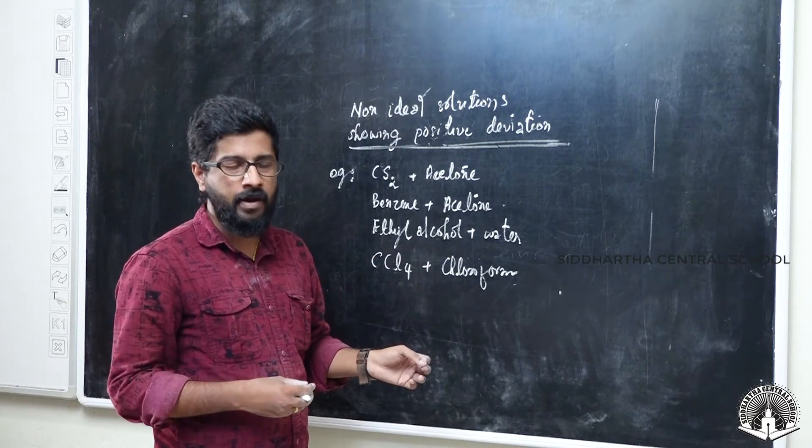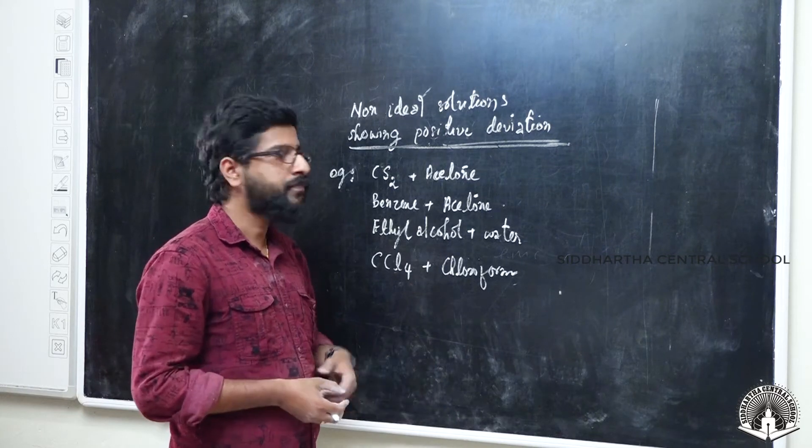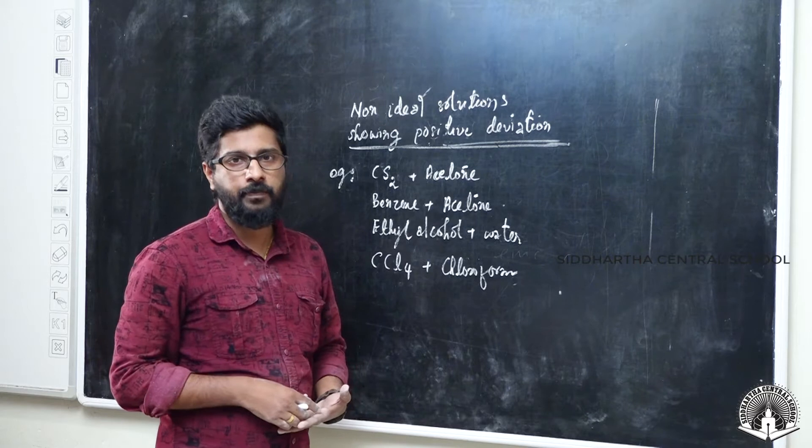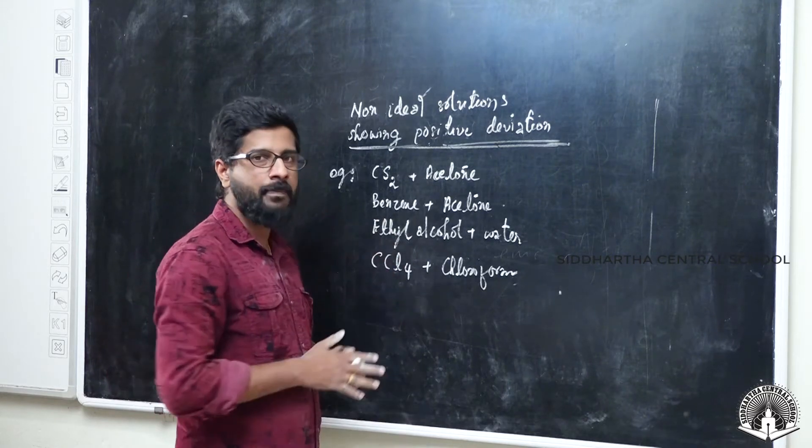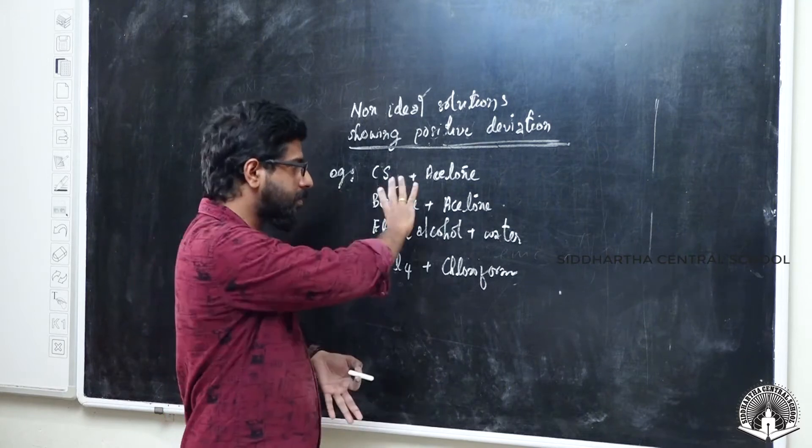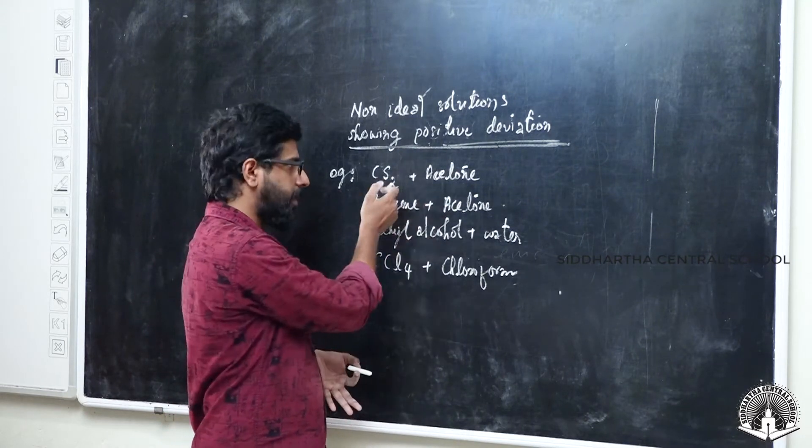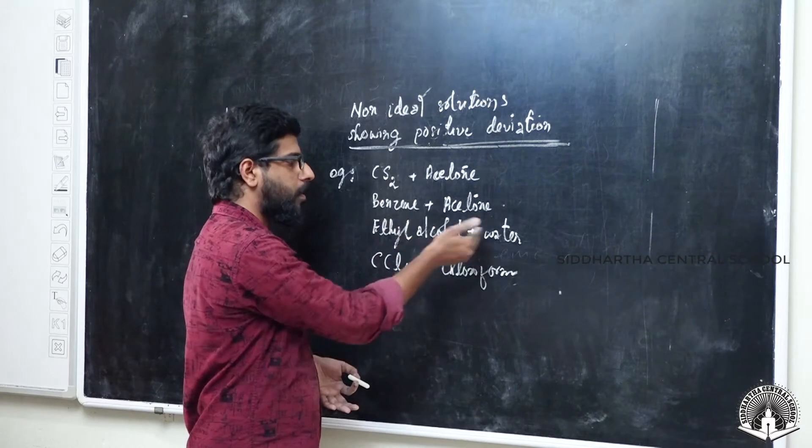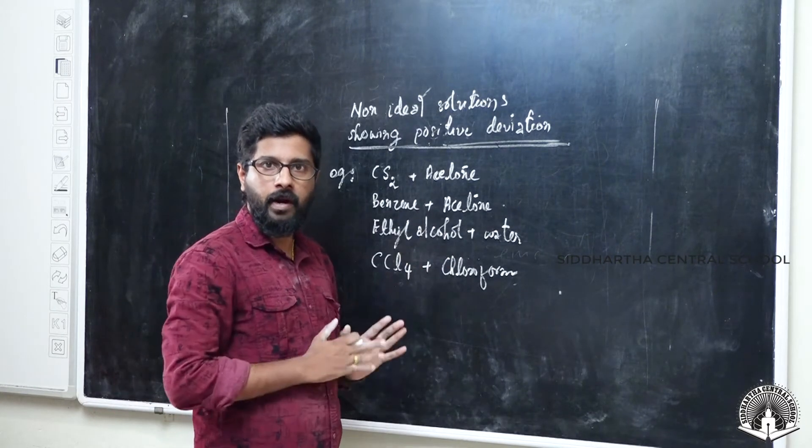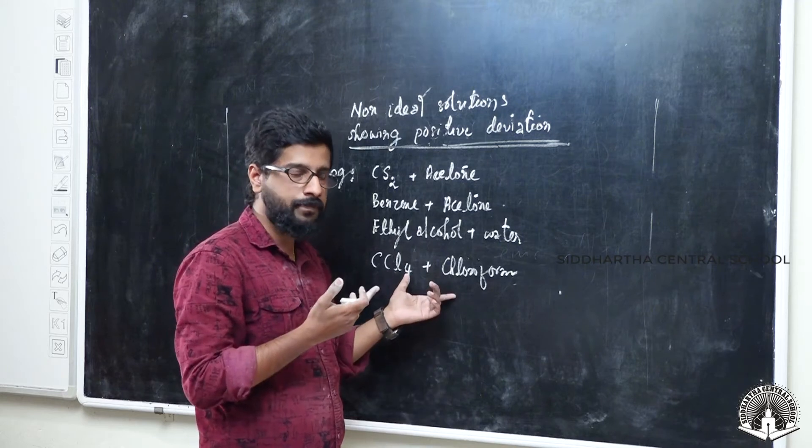When preparing for exams, positive deviation examples should be memorized by heart. CS2 plus acetone, benzene plus acetone, ethyl alcohol plus water, CCl4 plus chloroform. These examples are important to remember.